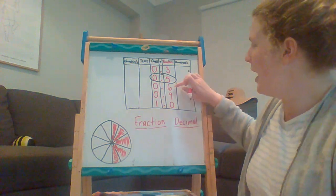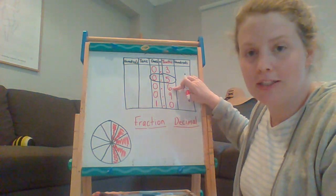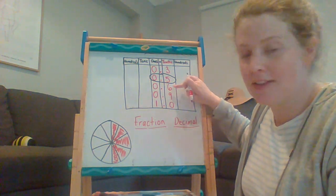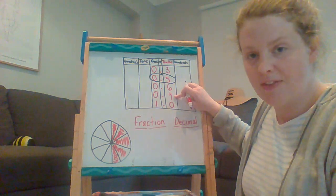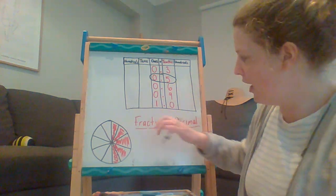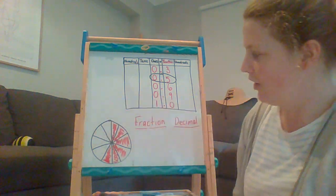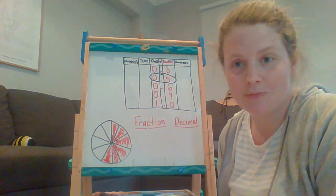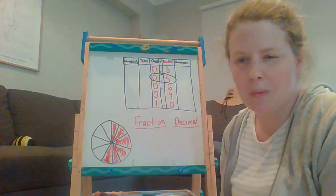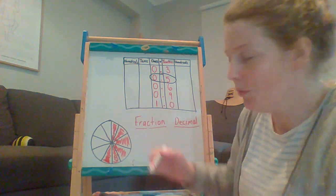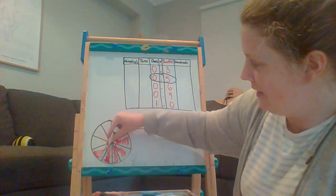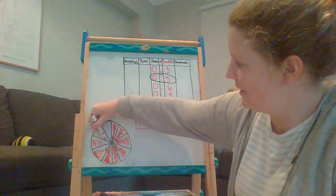Now, let's have a look at 0 and 6 tenths and 0 and 9 tenths. Now, have a think. If I ate only 6 tenths, but then I decided, no, I'm still hungry, I'm going to have some more, and I ate 9 tenths.